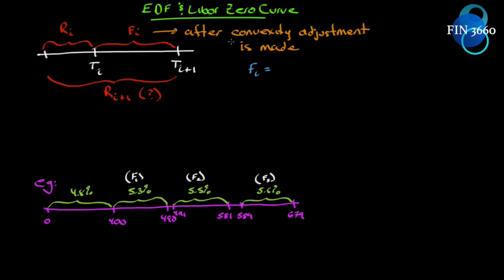So let's see what that looks like. Let's say that we have an observed rate from time zero to time t1 — a zero rate for that period — and we look at the Euro dollar futures contract. There's a futures rate at time t1 which applies to the period ti to ti+1. We've already calculated the zero rate, so the question is: what is the zero rate from zero to ti+1?